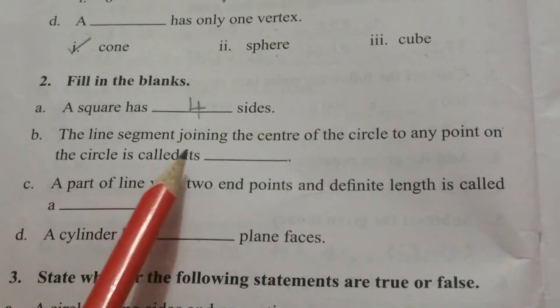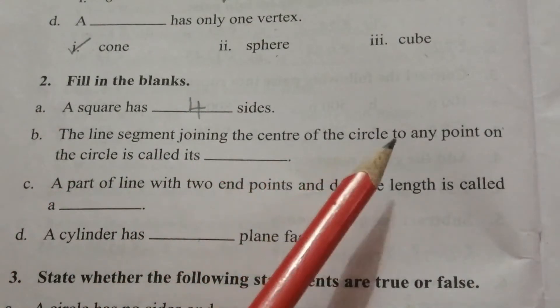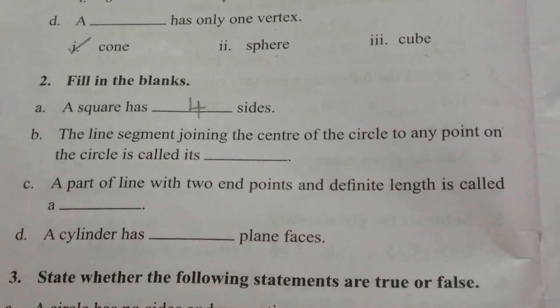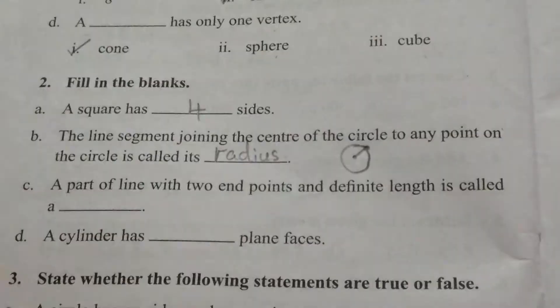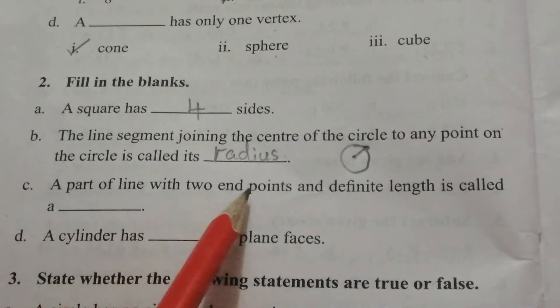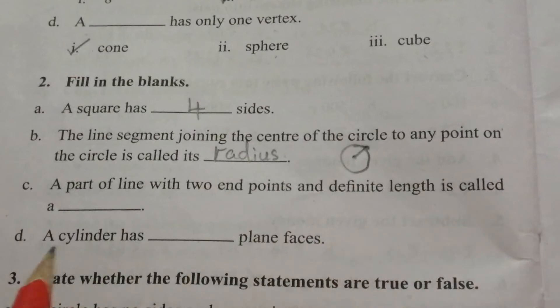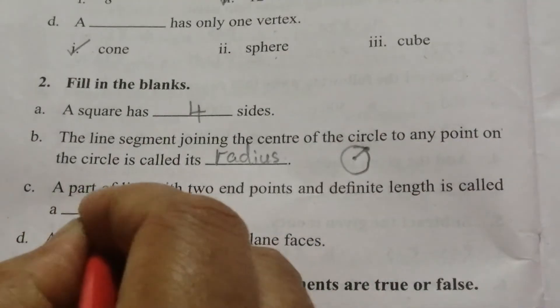B. The line segment joining the center of the circle to any point on the circle is called its radius. C. A part of line with two end points and definite length is called a line segment.